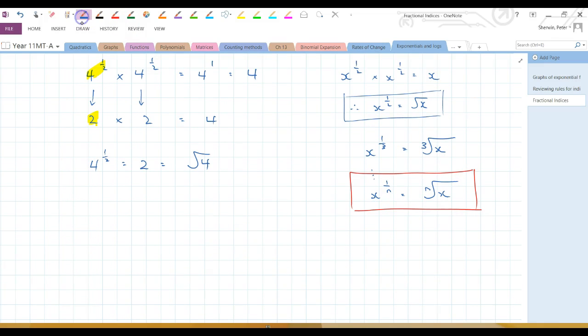But as we know, in the real world this is not always one up here, so what about when it's x to the power of m over n? Well that's still the nth root of x, but it's now the nth root of x all to the power of m.